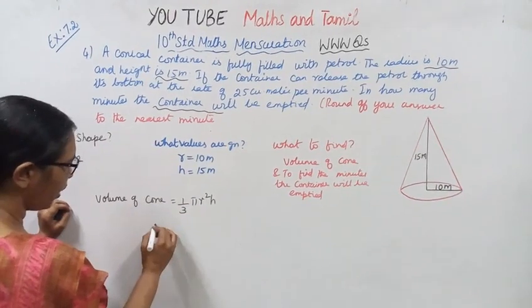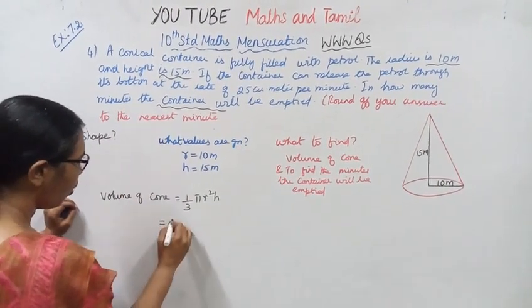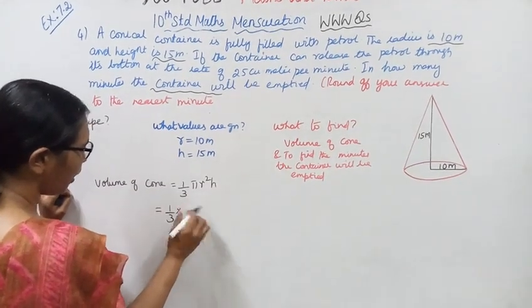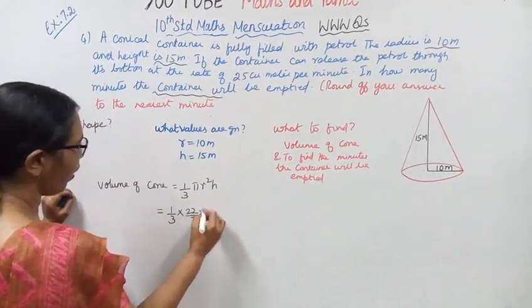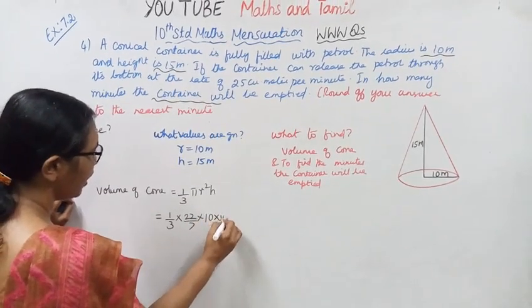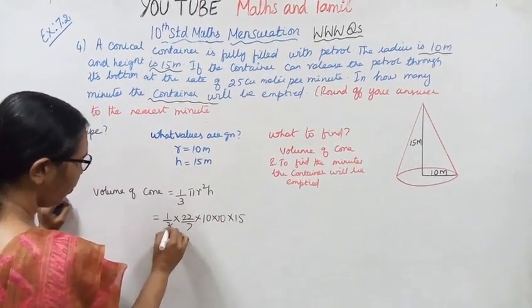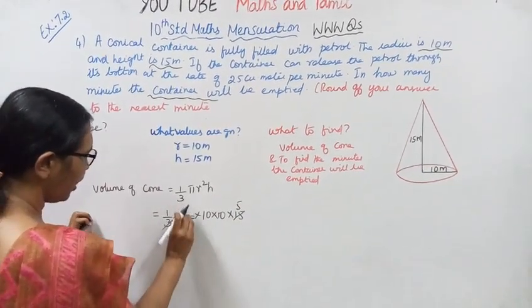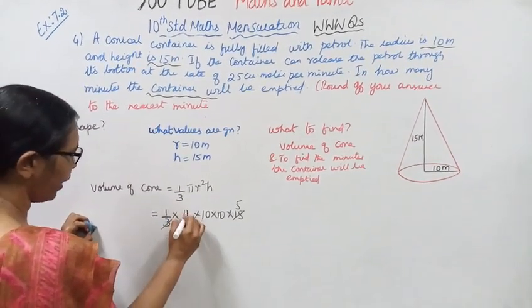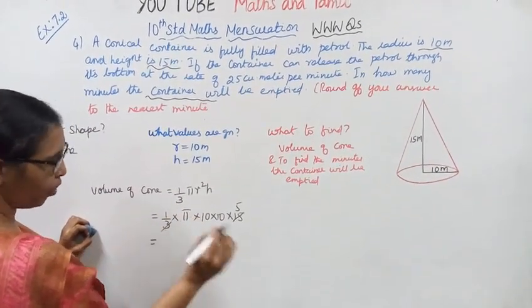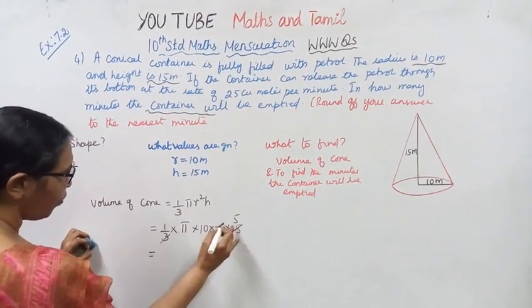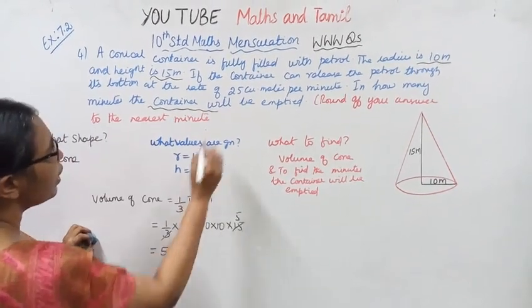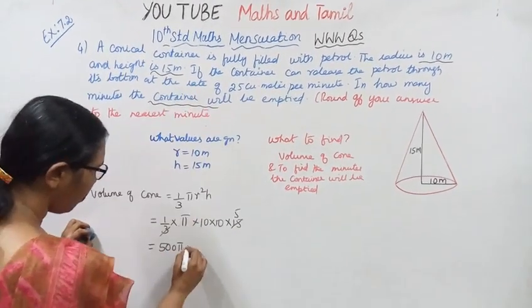1 by 3, pi r square h. 1 by 3, pi r h. 22 by 7, r value 10 into 10, 15. Here 5 and 3 cancel, leaving 5. 22 by 7, 5 into 10 is 50, so 505 meter cube.